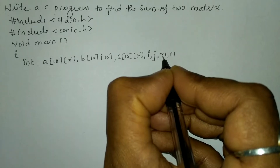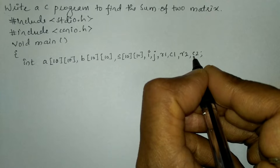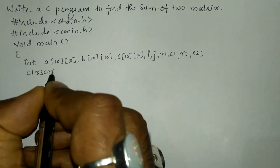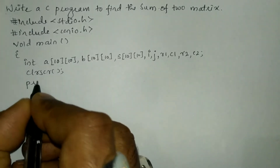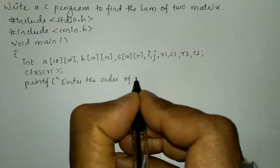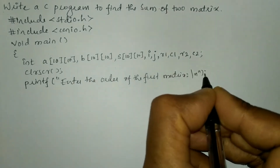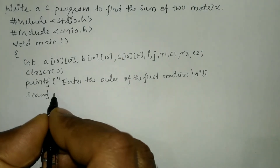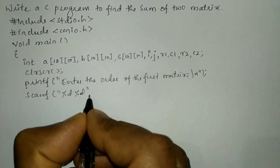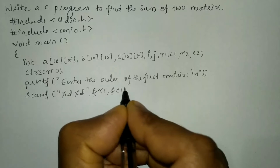R1 is the row of the first matrix and C1 is the column of the first matrix. Now let us ask the user to enter the order of the matrix. We'll write clrscr to clear the screen, then a printf statement asking the user to enter the order of the first matrix, followed by a scanf statement with format specifier %d %d to receive the response from the keyboard. Here the order is the number of rows and columns of the first matrix, so we write ampersand R1 comma ampersand C1 and put semicolon.